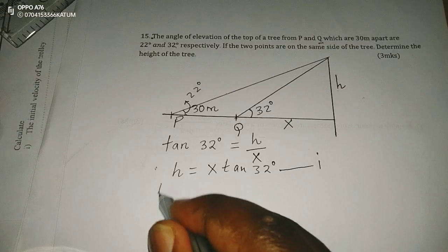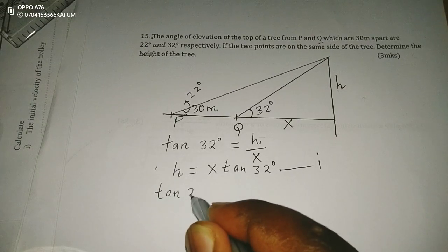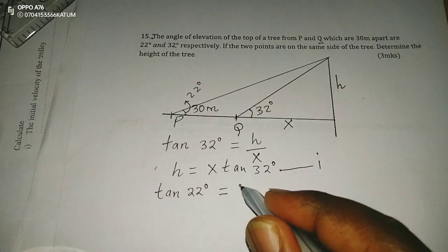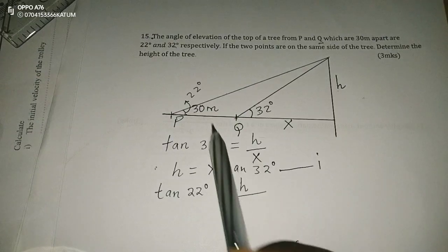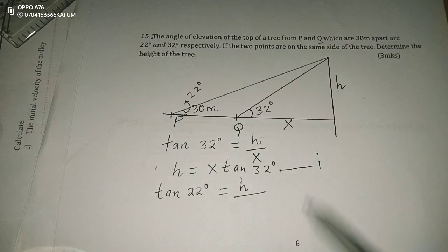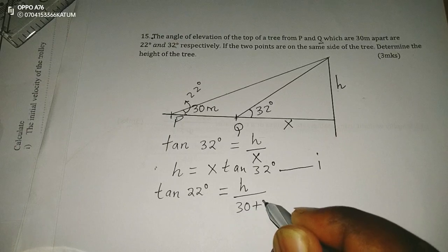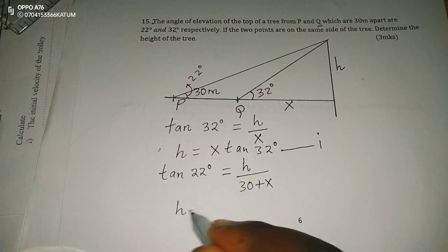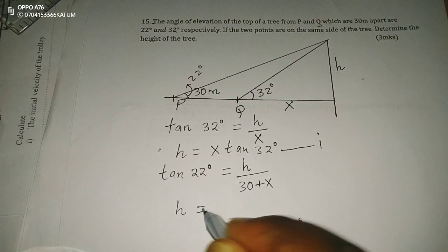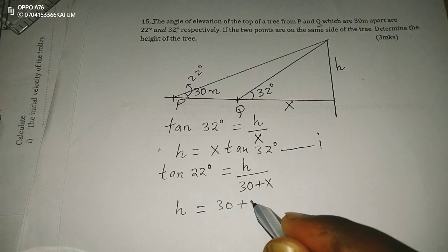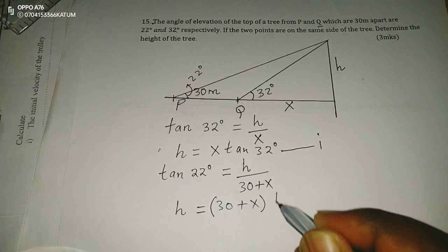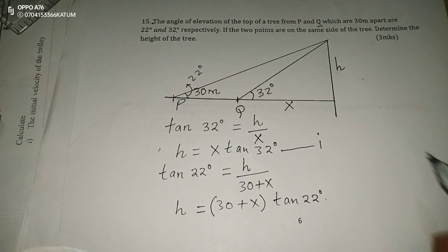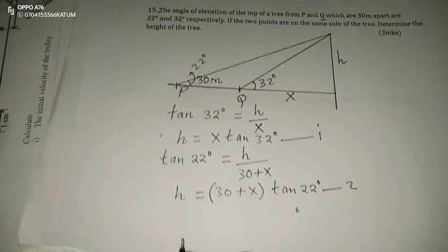We can also use the angle of 22 degrees and say that the tangent of 22 degrees is equivalent to the opposite length H divided by the adjacent length, which is 30 plus X — the total length. So H is given by (30 + X) multiplied by the tangent of 22 degrees. This is the second equation.